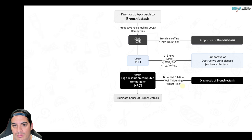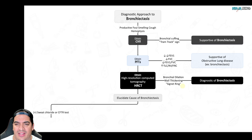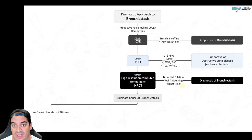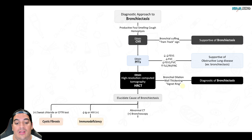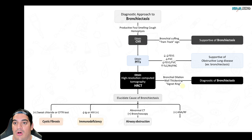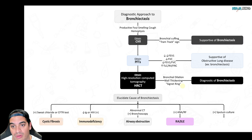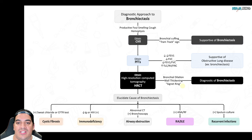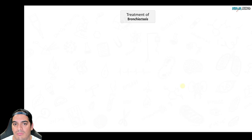Once bronchiectasis is confirmed, identify the cause: test for cystic fibrosis with a sweat chloride test or CFTR genetic test; check immunoglobulin levels and test for HIV; look on CT or bronchoscopy for tumors or foreign bodies causing airway obstruction; check autoimmune factors for RA or SLE; and obtain sputum cultures to check for H. influenzae, Pseudomonas, mycobacterium, or Aspergillus suggesting recurrent infections.